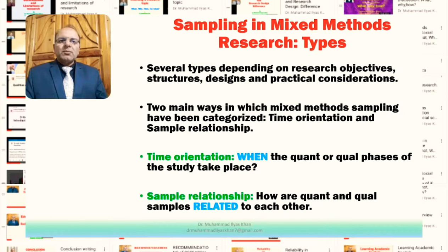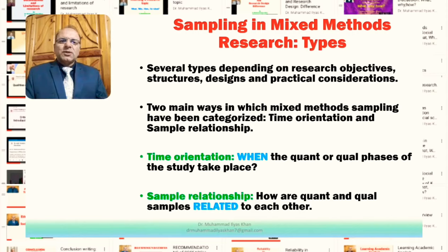In terms of time orientation, time orientation means the 'when' of the quantitative or qualitative phases of the study. In mixed methods research, we have quantitative and qualitative parts. When the quantitative part takes place and when the qualitative part takes place is what we deal with in this time orientation way of looking at the categories. The sample relationship is actually how quantitative and qualitative samples are related to each other.